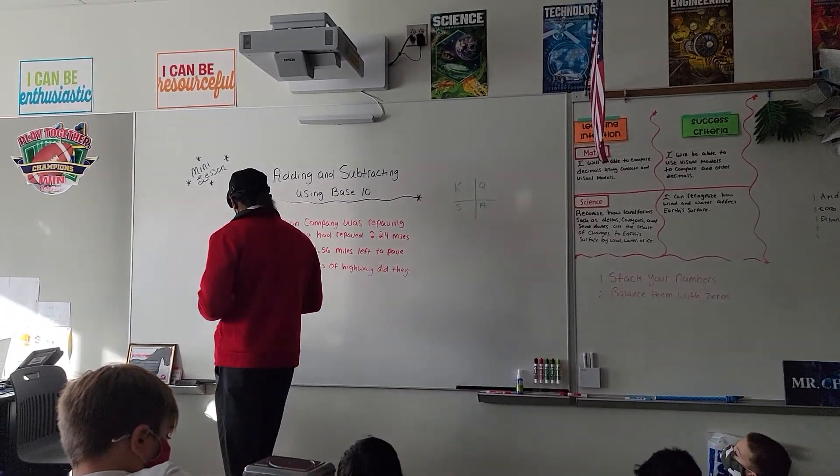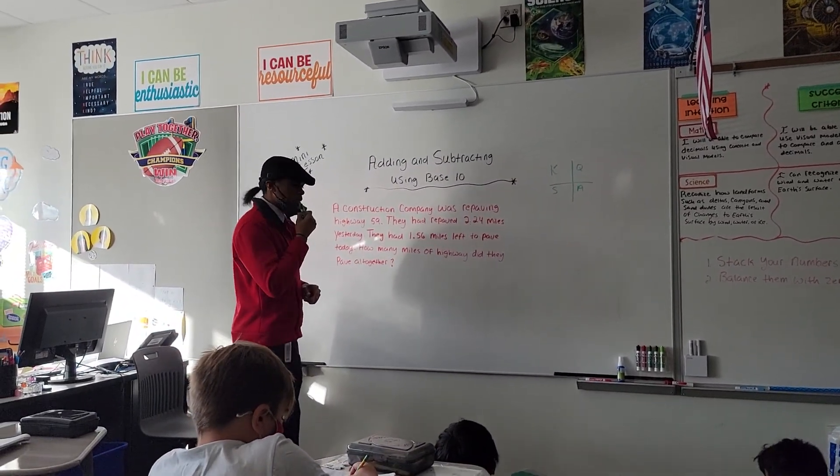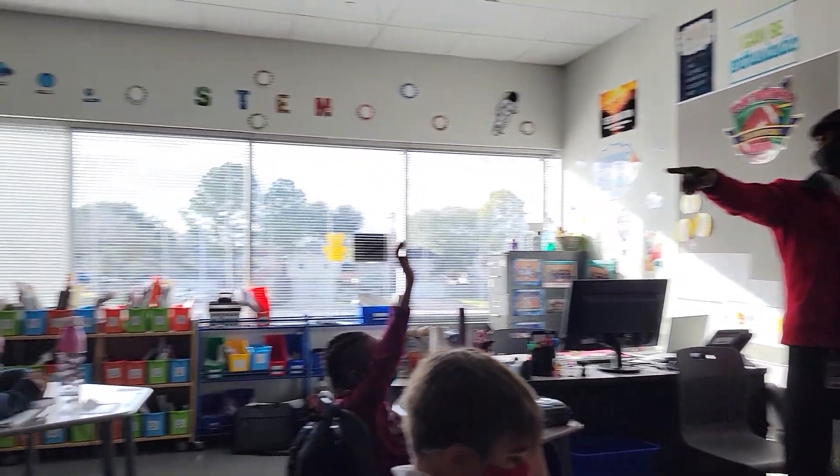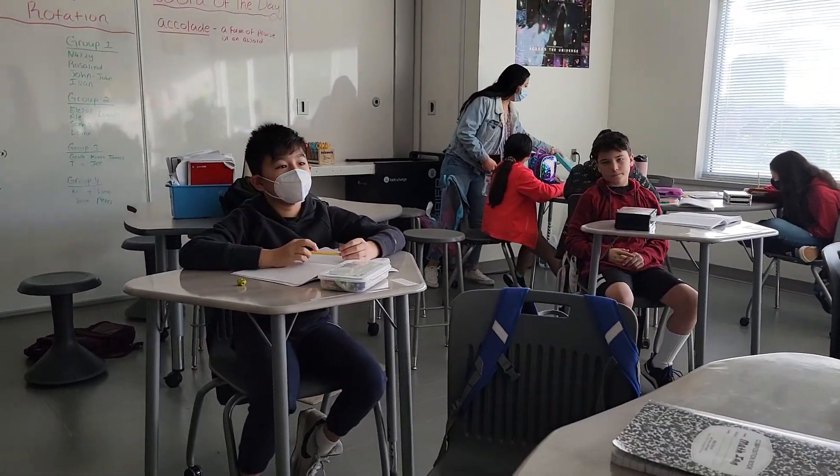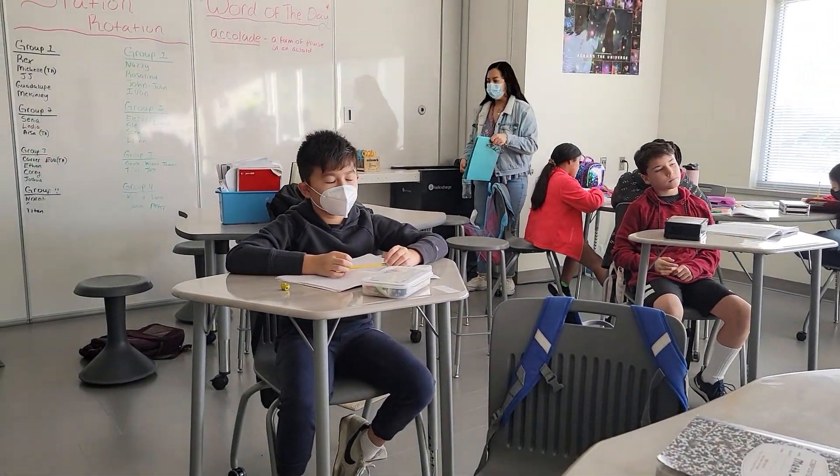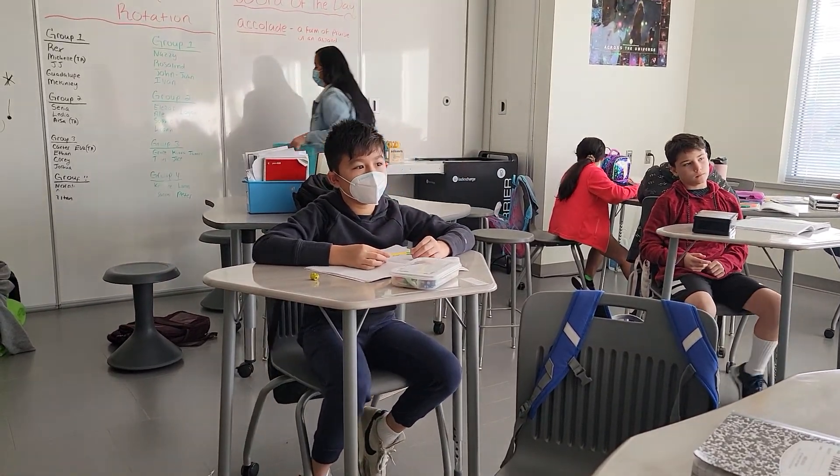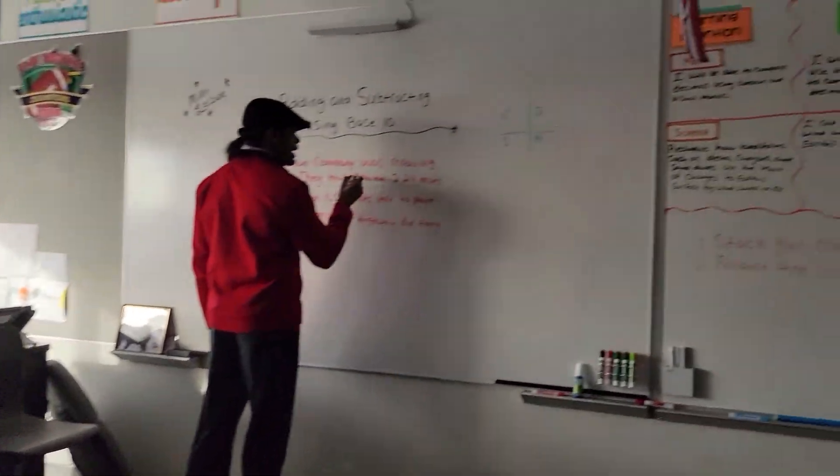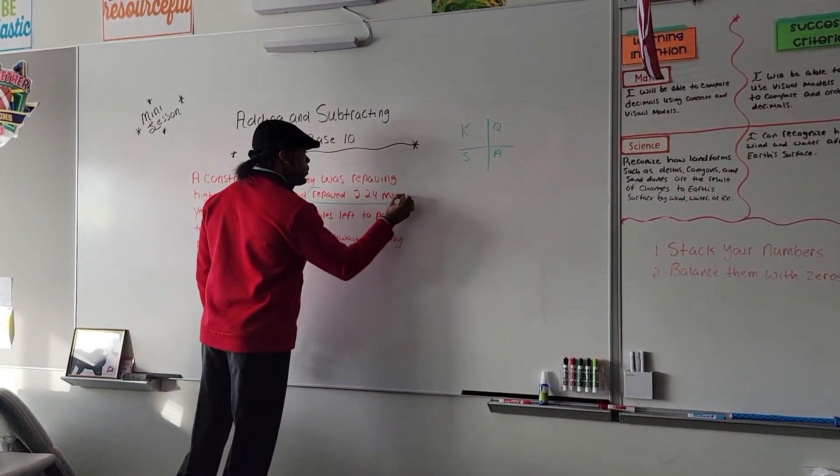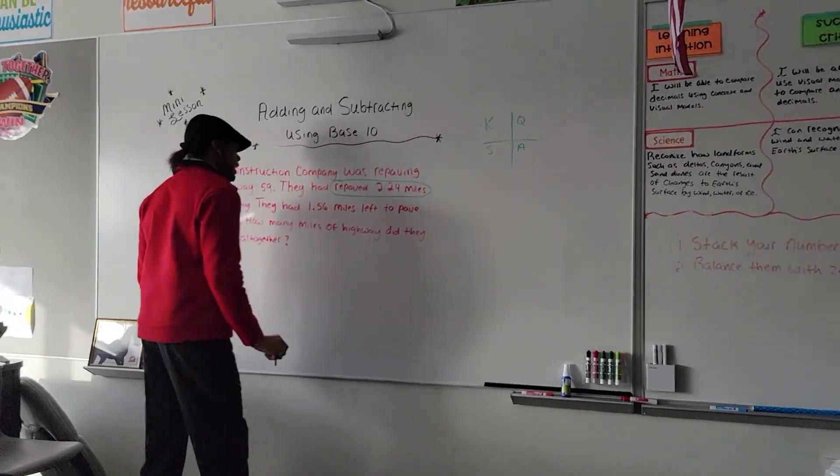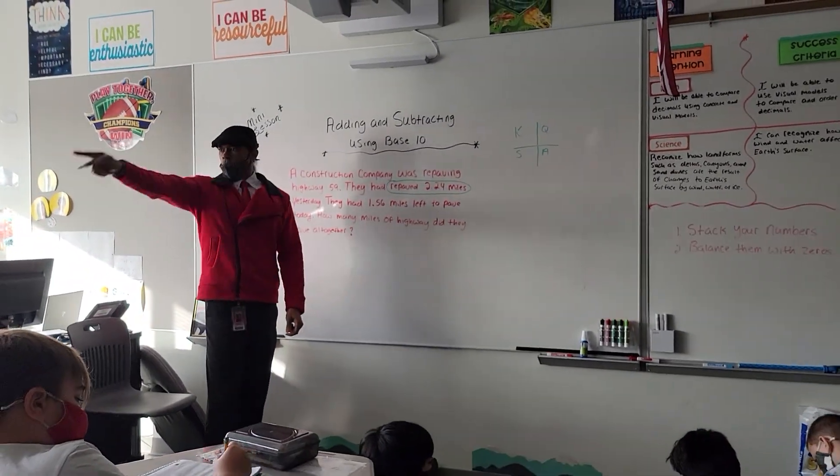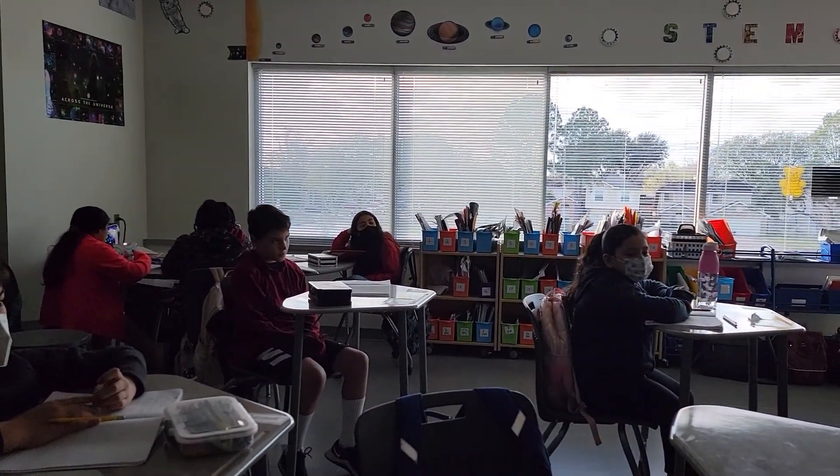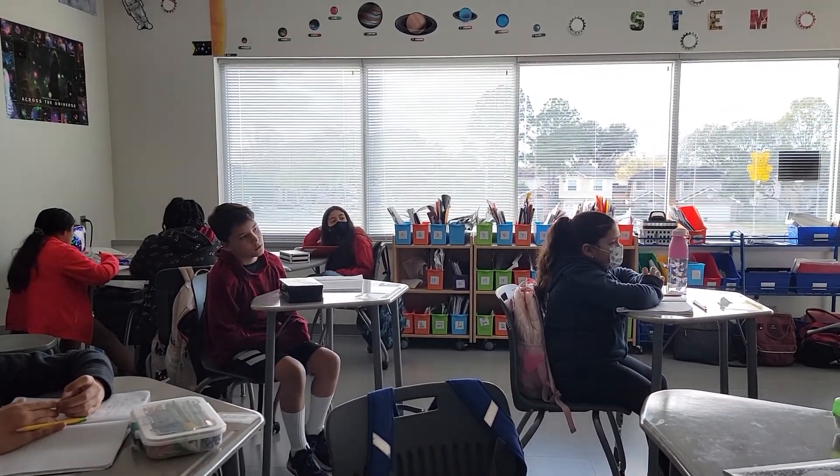Now, looking at this particular question, what is something that we know? Volunteer. We know that they have repaved 2 and 24 hundredths miles yesterday. Okay. So we are going to circle that they repaved 2.24 miles. And what is something else that we actually know? What we also know is they have 1.56 miles left, hundredths miles left to pay.